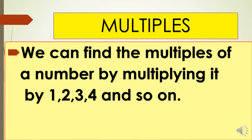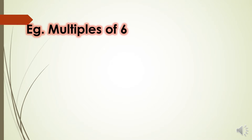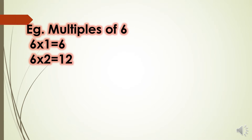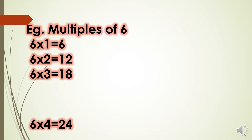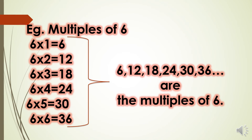We can find the multiple of a number by multiplying it by 1, 2, 3, 4, and so on. Here is an example: multiples of 6. When we multiply 6 by 1, 2, 3, 4, 5, etc., we get the multiples of 6. The multiples of 6 are 6, 12, 18, 24, 30, 36, etc.